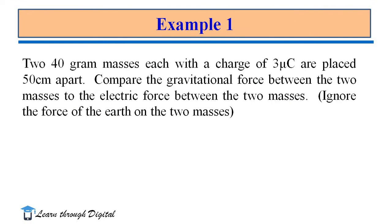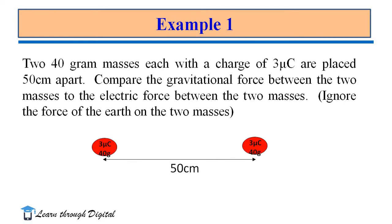First example: we consider two 40-gram masses, each with a charge of 3 microcoulombs, placed 50 cm apart. Compare the gravitational force between the two masses to the electric force between the two masses. Ignore the force of the earth on the two masses. First, we have to read the statement of the problem two or three times, then interpret the statement into a pictorial representation. We draw the diagram: 40-gram mass with 3 microcoulomb charge, two masses separated at a distance of 50 cm.